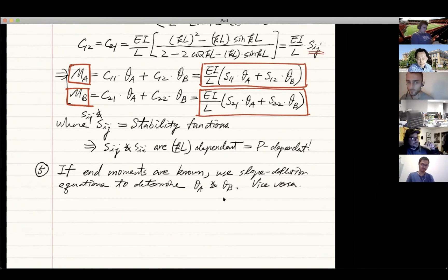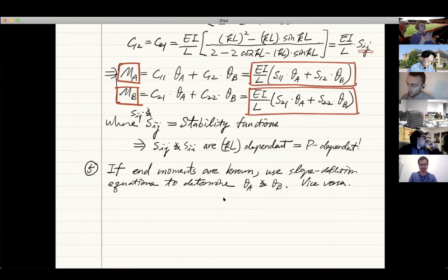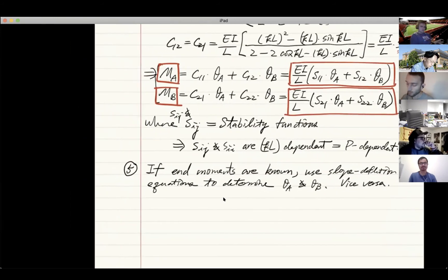Vice versa. If you know the angle, how do we know the angle? If you know the boundary condition, then you use it to do it. So what are the examples? Like this.